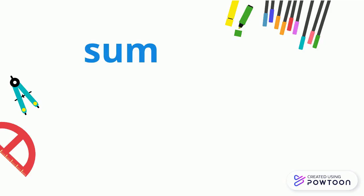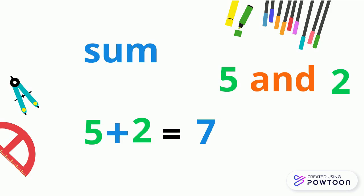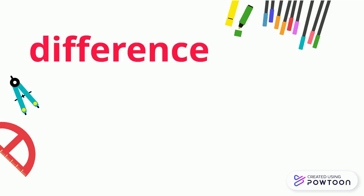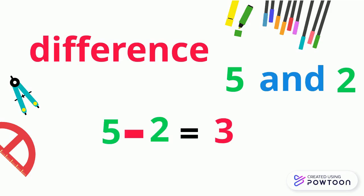For example, the sum of five and two is five plus two equals seven. And the difference between five and two is five minus two equals three.